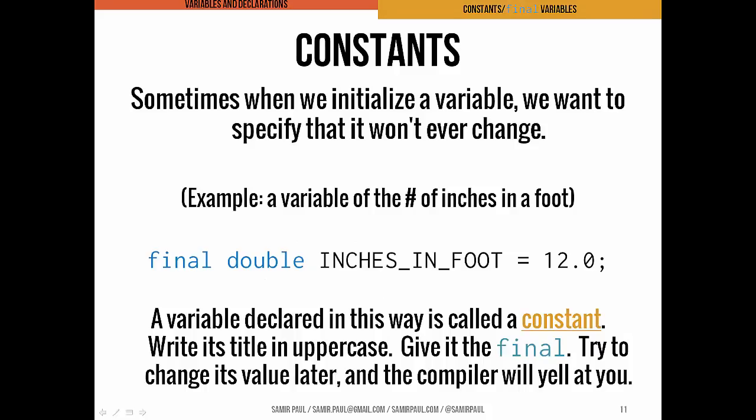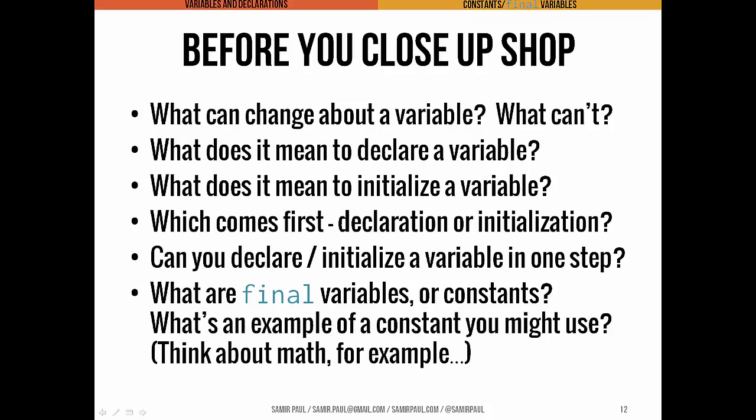Now, one other topic for the day. This is a special keyword we can use when we declare some variables — it's called the final keyword, and it allows us to make constants. We use this when we have a variable we want to declare and initialize but never change its value, ever. There's never going to be more than 12 inches in a foot, and there's never going to be a different value for pi other than 3.14. The point of the final keyword is, first, to signal to anybody reading your code that this is never going to change, and second, to have the compiler throw an error if you actually do try to change the value of that variable during the program.